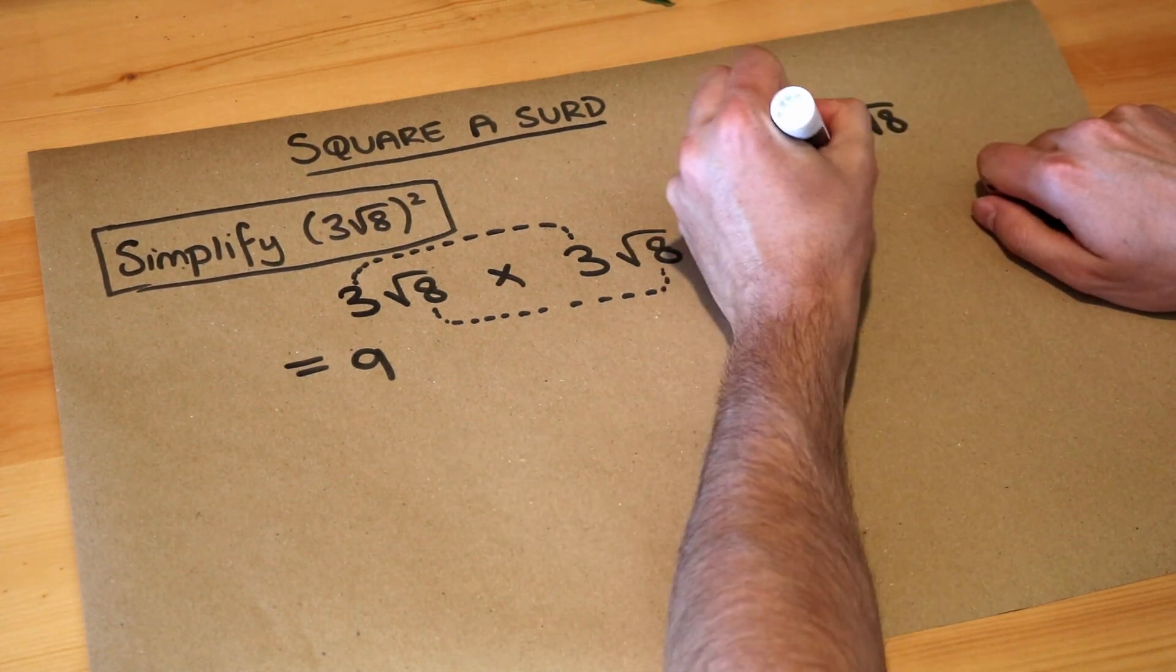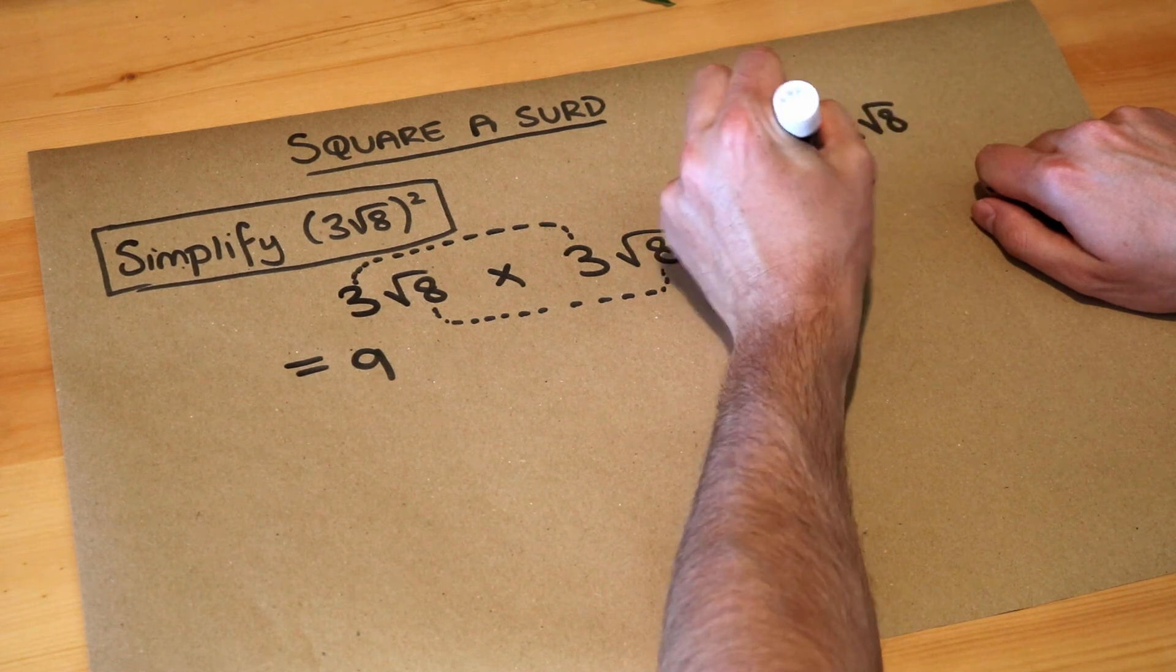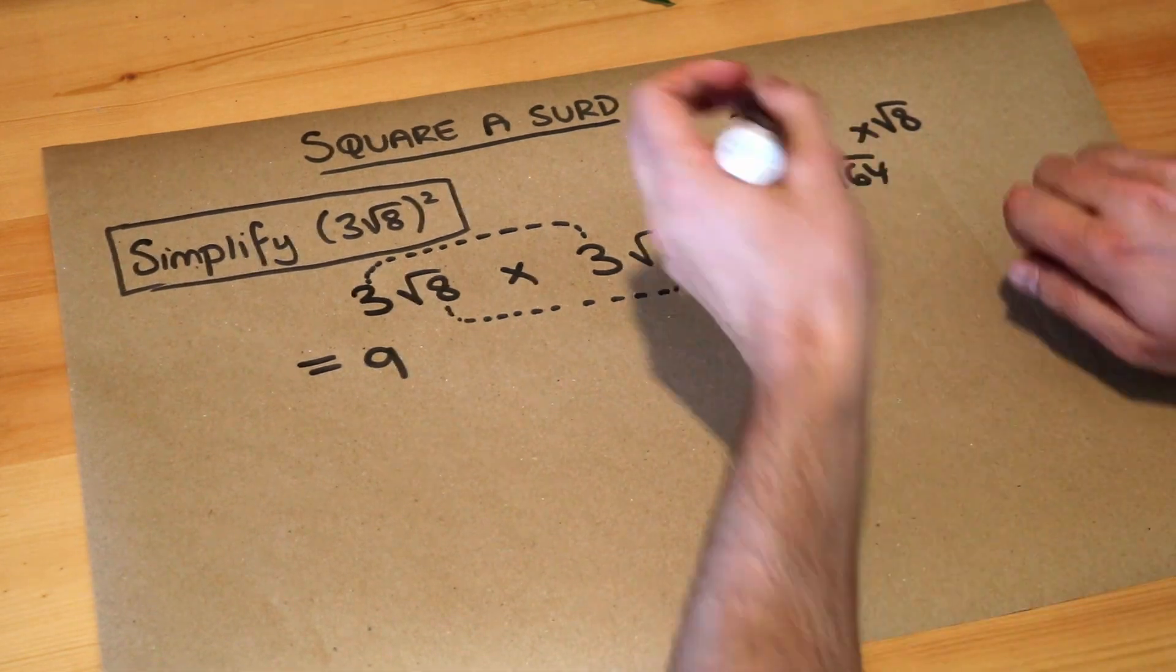8 times 8 is 64, so it's root 64. But what's the square root of 64? Well it's 8, isn't it?